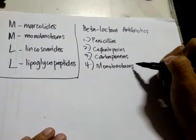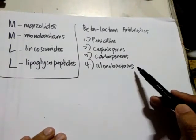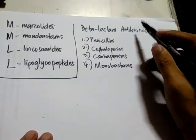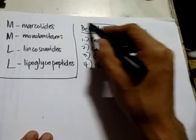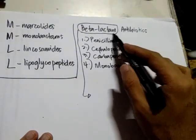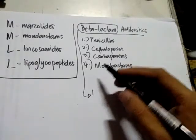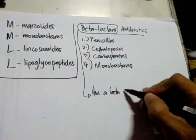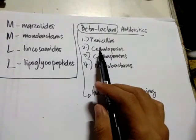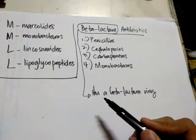So penicillins and carbapenems are from the PAKSTOP group, and monobactams are from the MMLL group — but they are all reclassified as beta-lactam antibiotics because they share a beta-lactam ring. Why is this important? Some bacteria produce an enzyme called beta-lactamase.